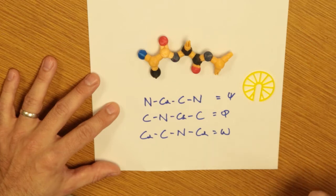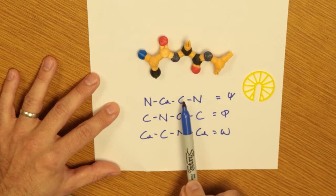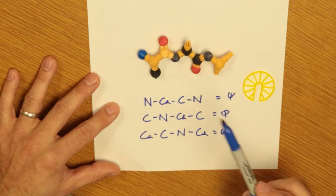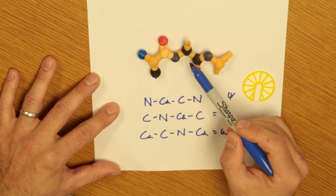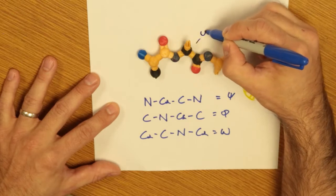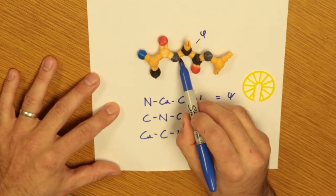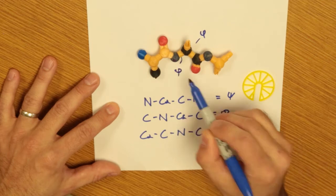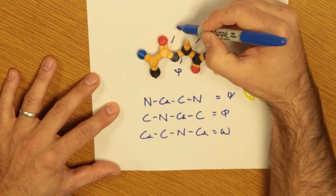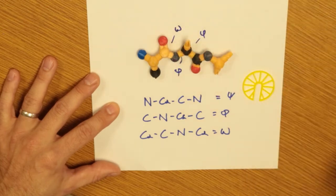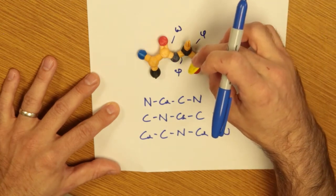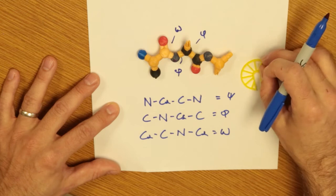Now keep in mind that it doesn't matter which direction you go, you could also go NCCαN. So if we were beginning here, here's NCCαN, it's the same torsion angle because the rotation is always going to be about that central bond. If we have this next one right here, this is going to be the phi torsion angle. So here's the omega torsion angle that we have there. We're going to be able to put our torsion angle estimator at any of these positions and determine what that torsion angle is.